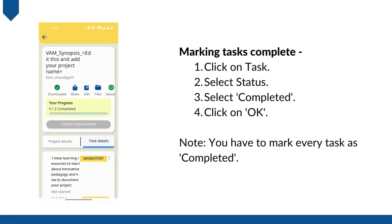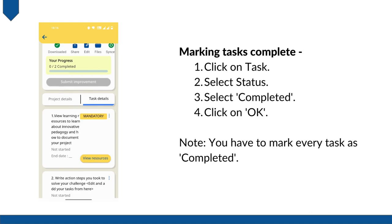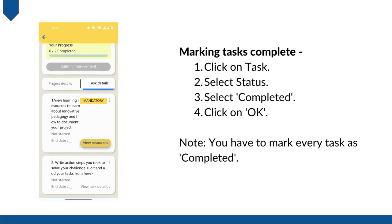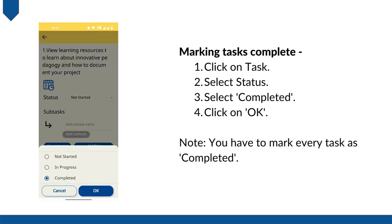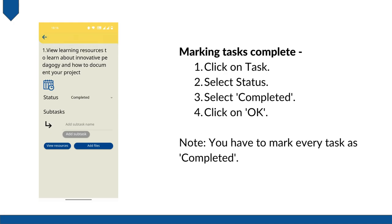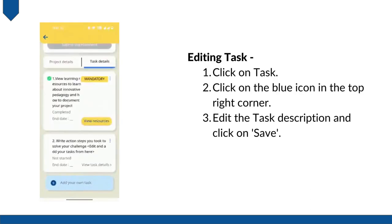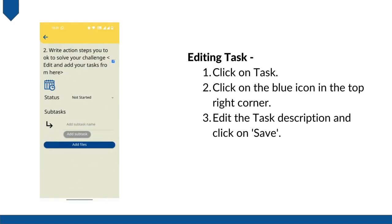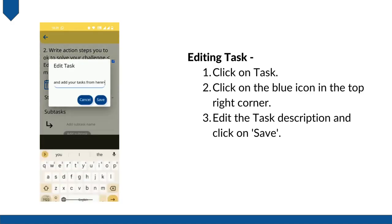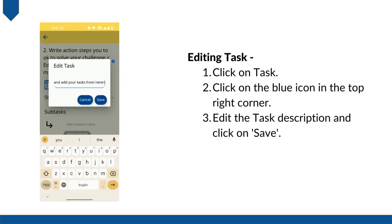Click on 'Task details' to access the tasks. Since you have viewed the learning resources in task 1, now you can click on task 1 and select the status as completed. Once you mark the task complete, a green icon will appear against the task number. Please note that you have to mark every task as complete. From task 2, you can start adding the action steps you have taken to implement your innovative pedagogy project. Here you are required to edit the text in task 2 by clicking on the blue icon beside the task, and add the first action step you have taken to innovatively solve for your challenge.